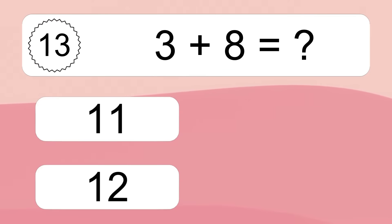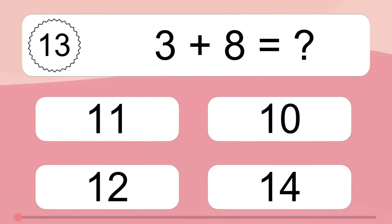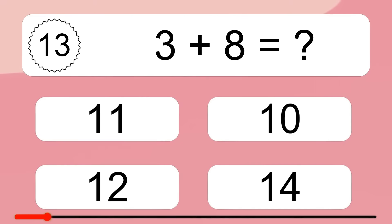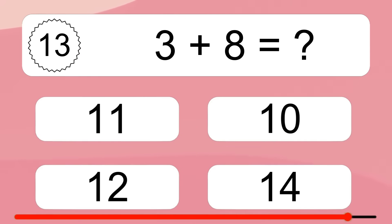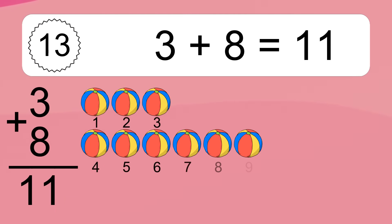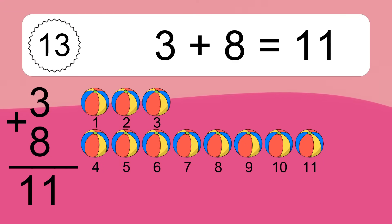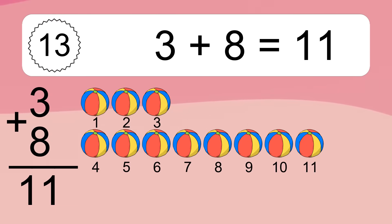3 plus 8 equals what? 3 plus 8 equals 11. Let's count it: 1, 2, 3, 4, 5, 6, 7, 8, 9, 10, 11.